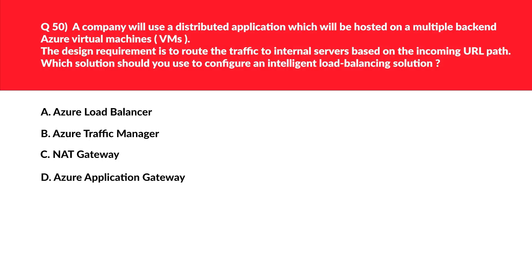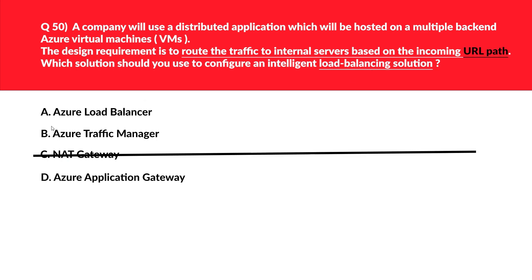This question will test your concepts on load balancing — a very important topic for the exam. Let's first look at option C, NAT Gateway. NAT gateway is in no way related to any kind of load balancing solution, so it's an incorrect choice. Option A is Azure Load Balancer, which works on layer 4 of the OSI model. As per the question there is a mention of URL path, which means the solution should support layer 7 of the OSI model. This is an incorrect option.